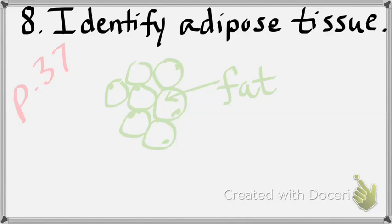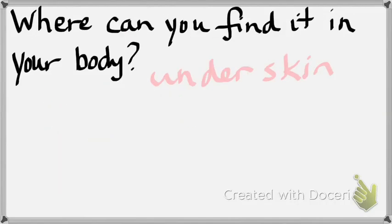I need you to know three functions of adipose. I've already given you one — to store energy or fat. Another function is insulation, and another is cushioning. Where can you find adipose in your own body? Men mostly store it abdominally; women store it in the hips and thighs as well. It's primarily under our skin — it separates skin from muscle.